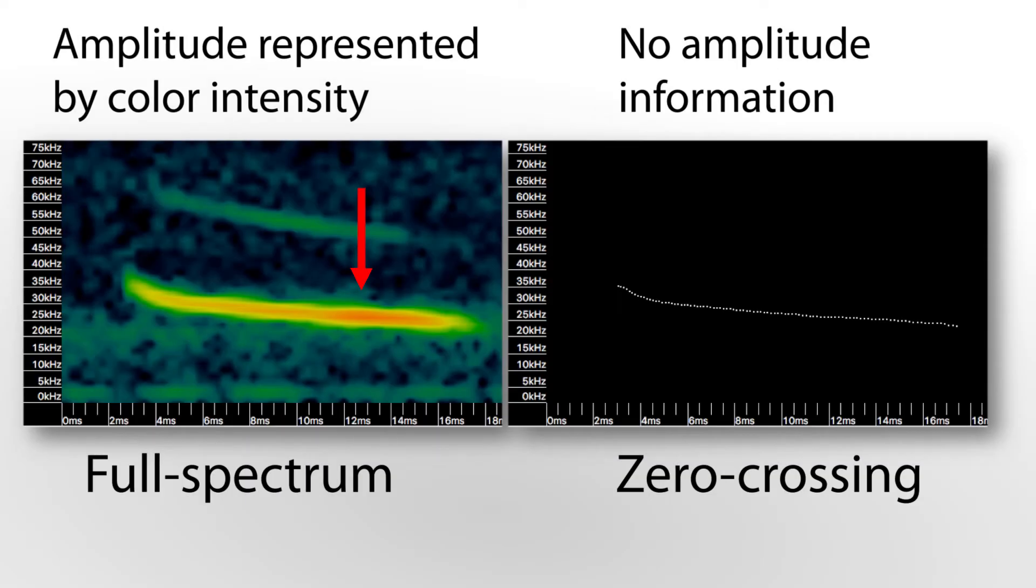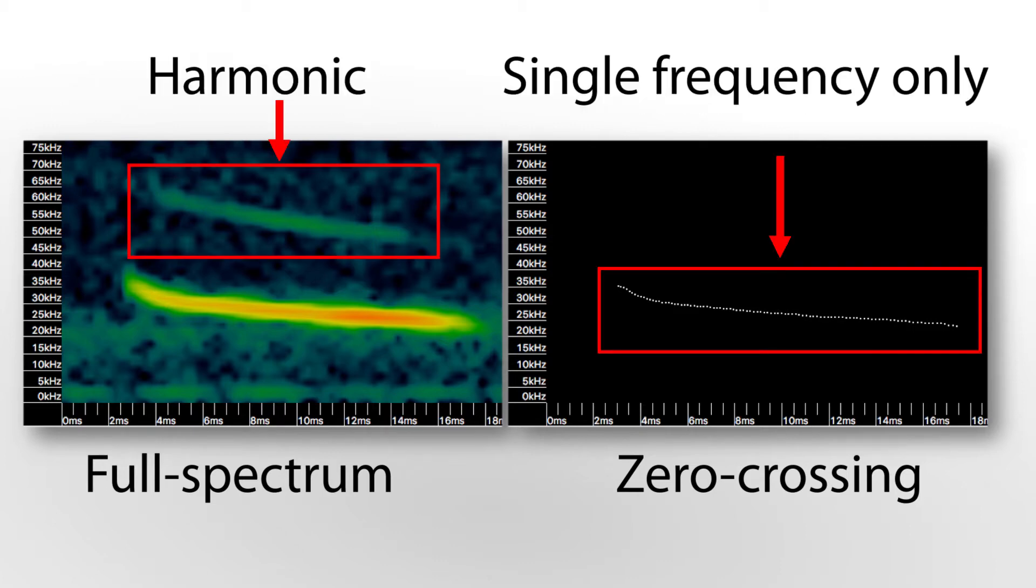Unlike a full spectrum file, a zero crossing file does not contain any amplitude information and can only represent a single frequency over time.